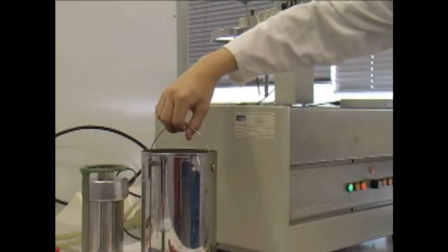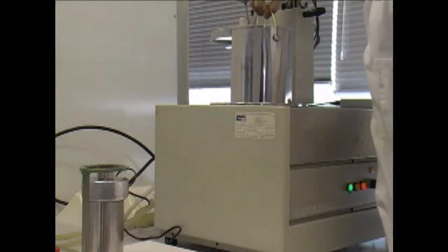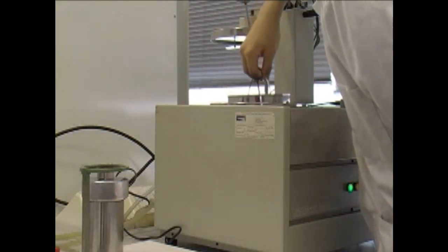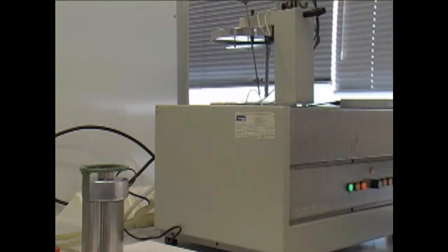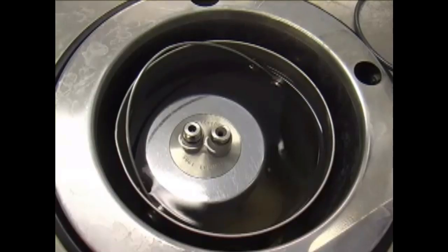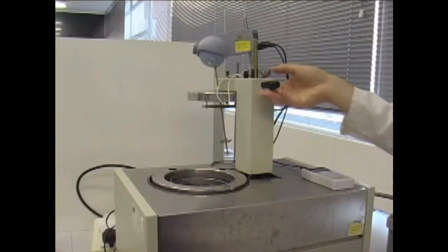The calorimeter is now assembled. A can of water is inserted. The can plus its contents weigh is actually 3 kilos. The assembled and pressurized bomb is then inserted in the can. The lid of the calorimeter is closed.